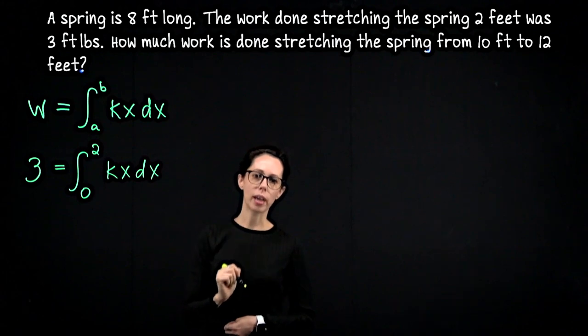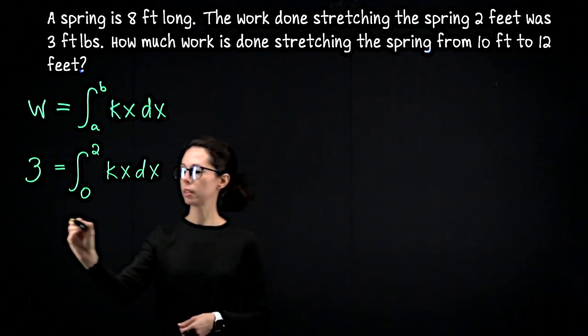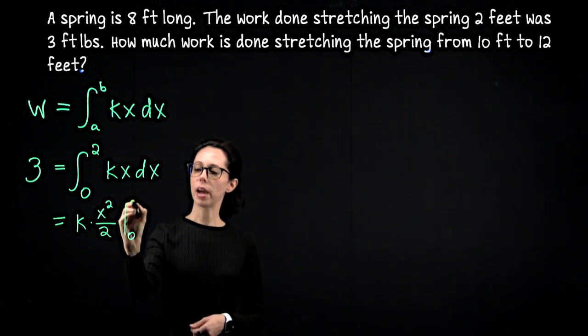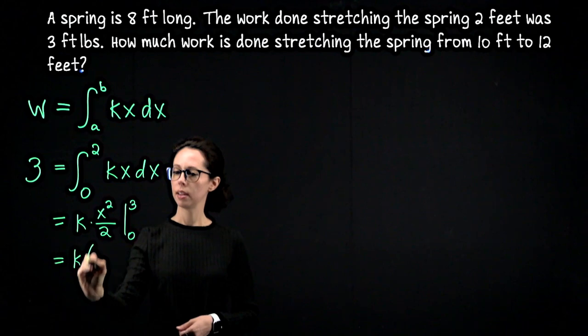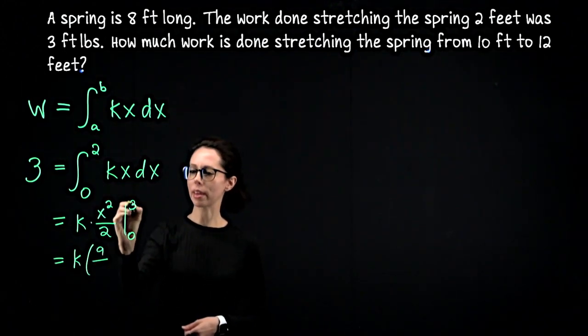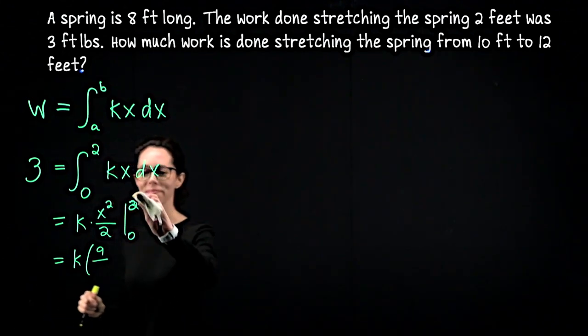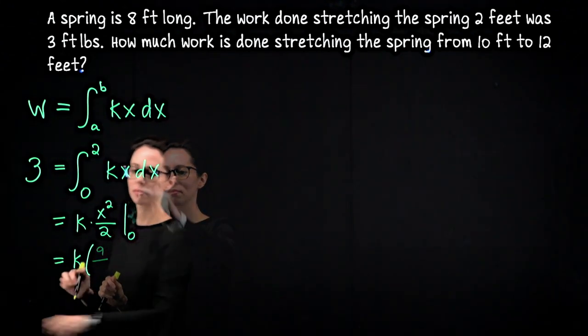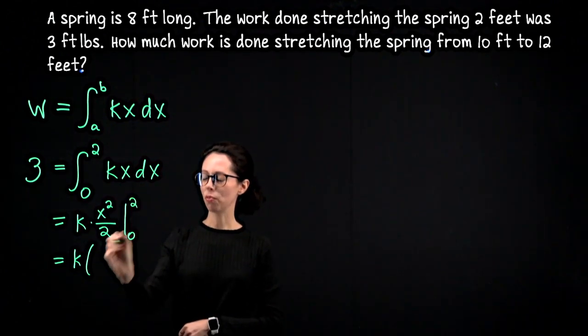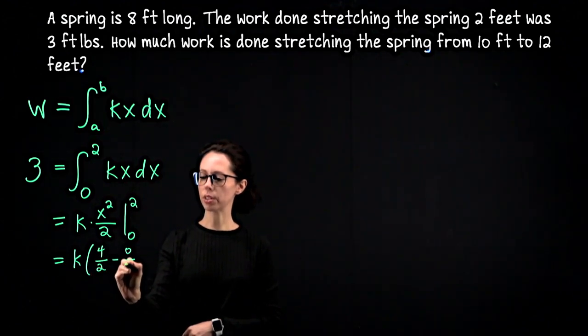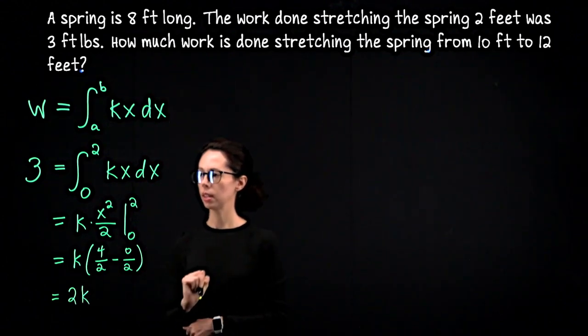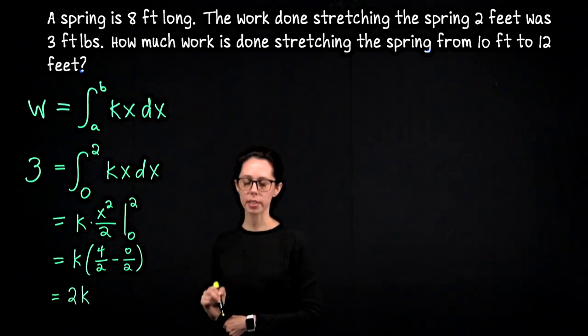We don't have k, but this equation will allow us to solve for it. So in particular, this is going to be k times x squared over two. Plug in our bounds, and we'll have... our bounds are from zero to two, four over two minus zero over two, so that's two k. Now we can solve for k, and we know that for this particular spring, the spring constant is three halves.